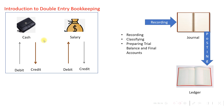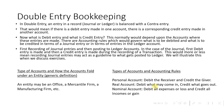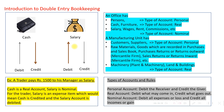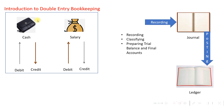So we credit the cash account. Now, what is the debit entry? We debit the salary account. Salary is an expense item and is a nominal account, so we debit all expenses or losses — meaning we debit the salary account. The money being paid out for salary comes from the cash account, so we credit the cash account as cash goes out. That is the basis of double entry bookkeeping.